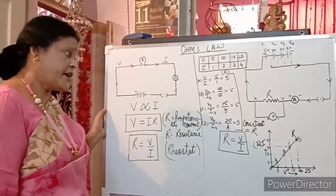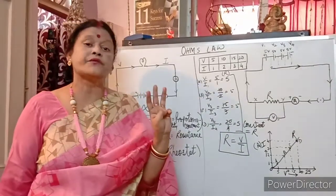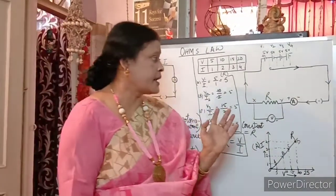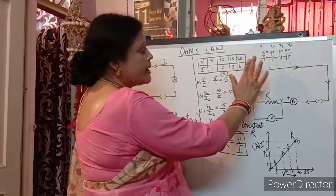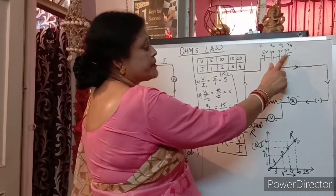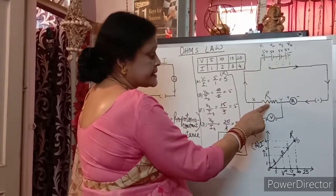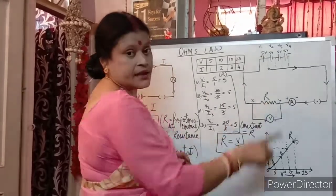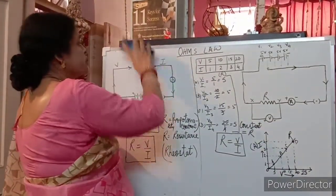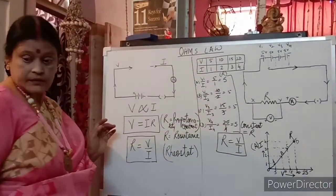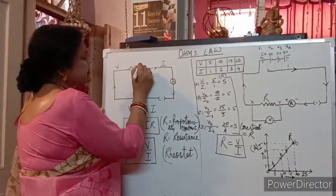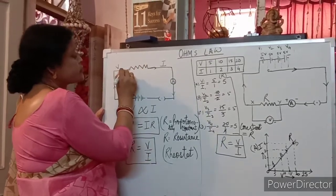Now how will we verify this law? Verification of Ohm's Law comes for three marks in your board exam. For verification, we will prepare a setup. We will take one cell, two cells, three cells, four cells. Resistance is shown in a circuit like this — with a zigzag symbol.